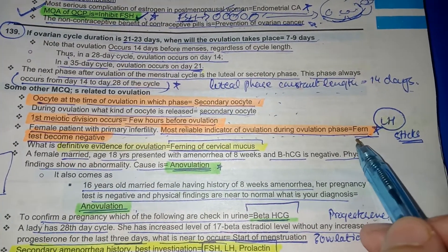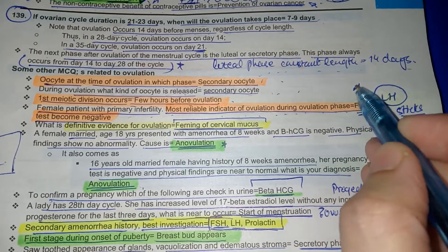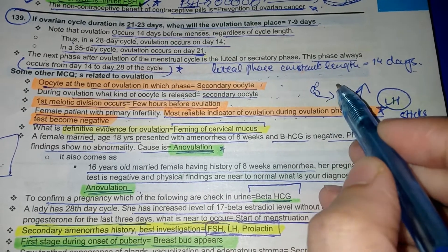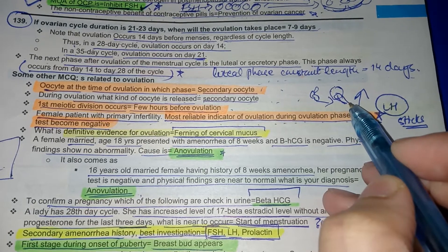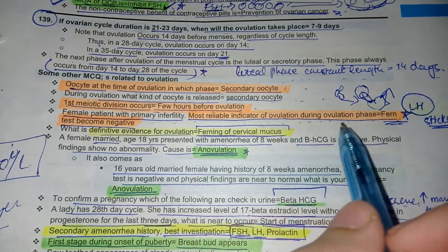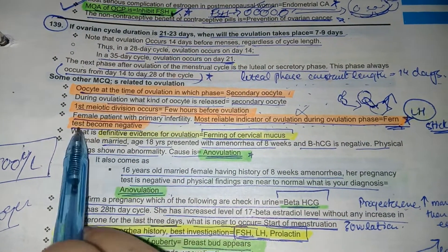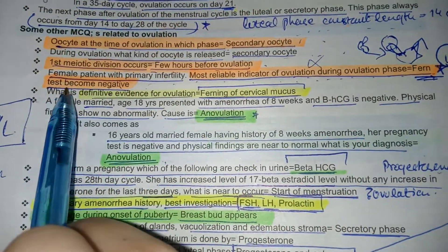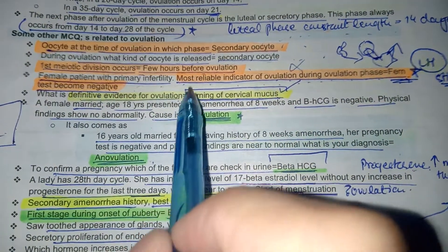Normally, the fern test becomes positive when LH rises, causing cervical mucus to become thin — this is the basis of ovulation sticks. So a negative fern test indicates no ovulation has occurred. The definitive evidence for ovulation is ferning of cervical mucus (positive fern test).